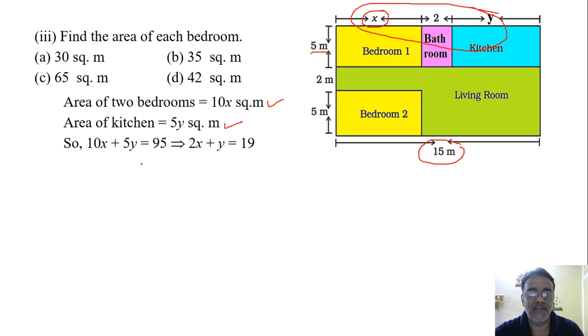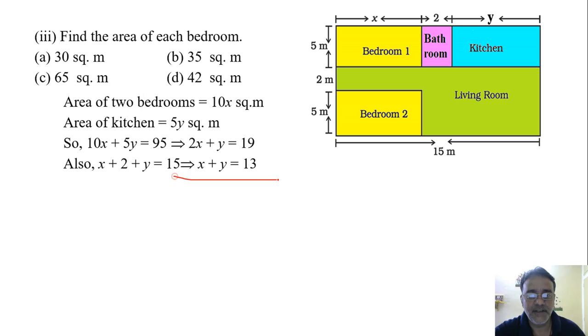So the area of two bedrooms we already got 10x square meter, area of kitchen is 5y, and the sum of this is 95. So we will get one equation as 2x plus y equals 19. Next I told you x plus 2 plus y equals 15. So second equation we got x plus y equals 13. So what we will do? We will subtract these two.